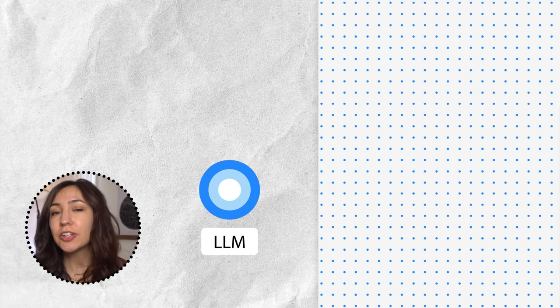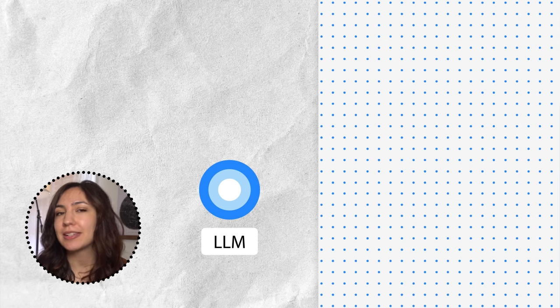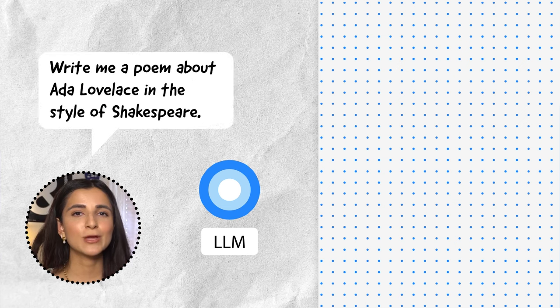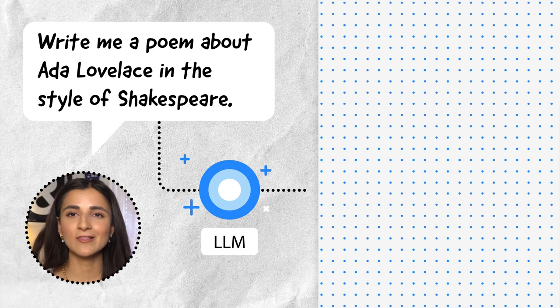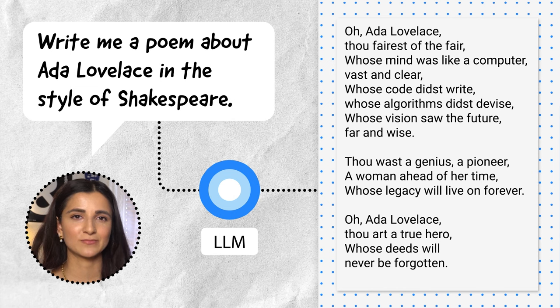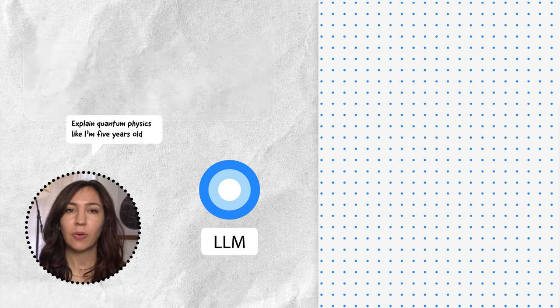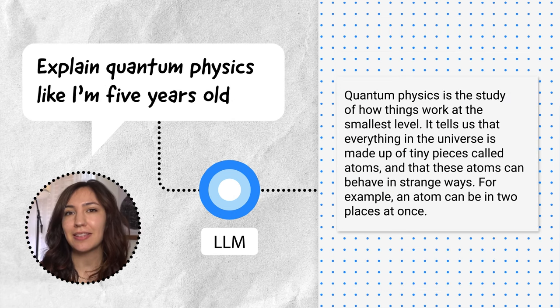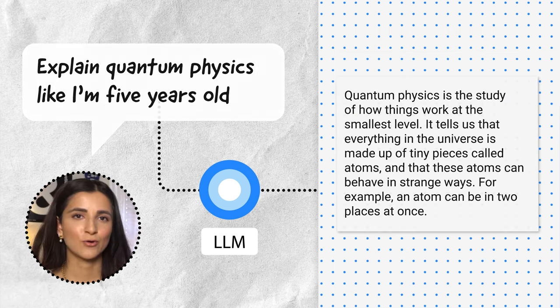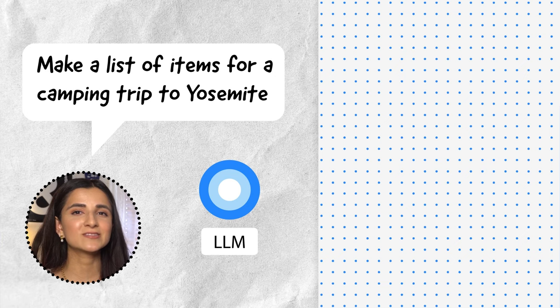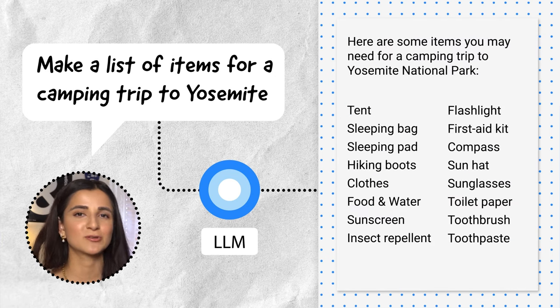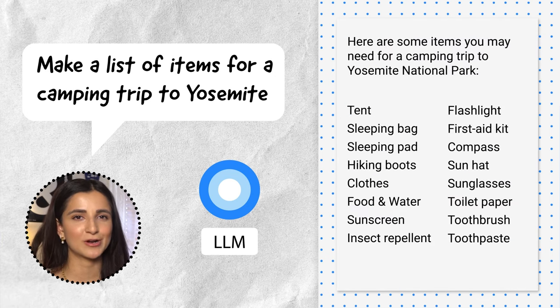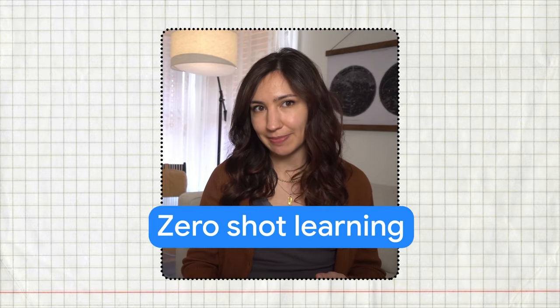For example, one way to structure a prompt is as an instruction, like: 'Write me a poem about Ada Lovelace in the style of Shakespeare,' or 'Explain quantum physics to me like I'm five,' or 'Generate a list of items I need for a camping trip to Yosemite National Park.' This approach — using a single command to get an LLM to take on a behavior — is called zero-shot learning.